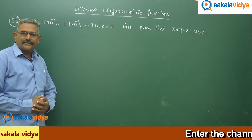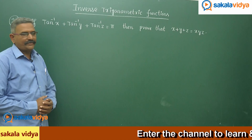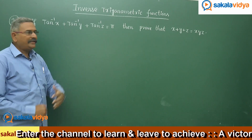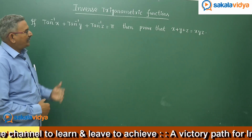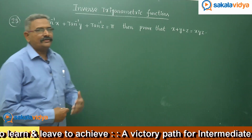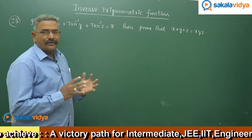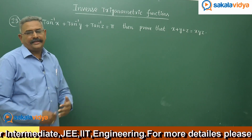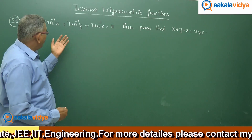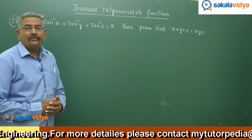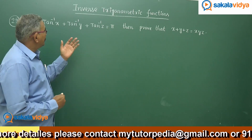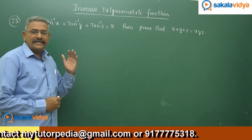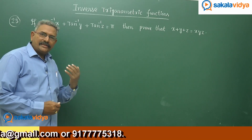Now let us observe one more question. If tan⁻¹x + tan⁻¹y + tan⁻¹z = π, then prove that x + y + z = xyz. Suppose tan⁻¹x = a, so x = tan a; tan⁻¹y = b, so y = tan b; tan⁻¹z = c, so z = tan c. That means a + b + c = π, or 180 degrees.